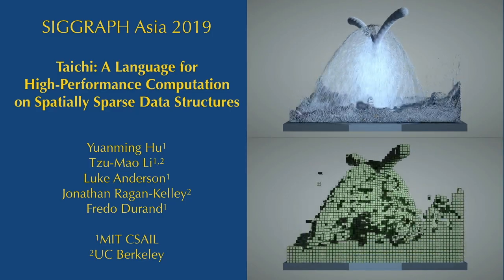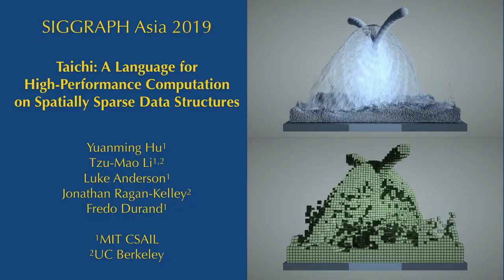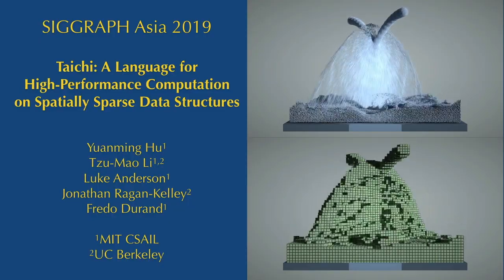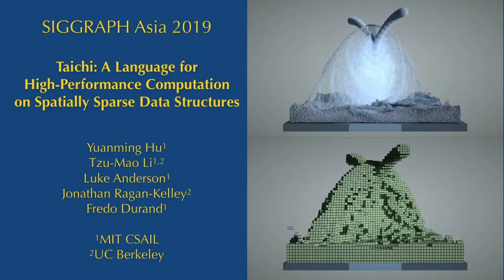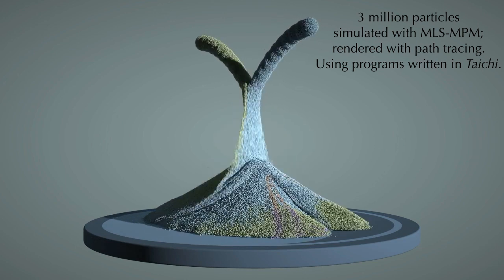In this work, we introduce a new programming language called Tai Chi. Using this language, programmers can easily write high-performance code on spatially sparse data structures. Here we show a sandy animation simulated and rendered using Tai Chi programs.